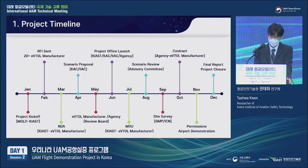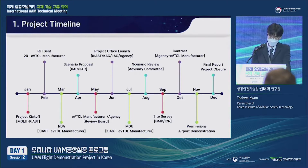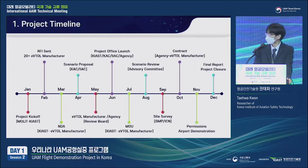Now I will briefly introduce the timeline for the flight demonstration project. This project was initiated in early January last year, led by MOLIT, in order to promote the introduction of UAM service and improve social acceptability. In February, a request for information was sent out to some 20 domestic and overseas eVTOL companies to secure the UAM aircraft needed for the program. Only a few companies showed a positive response, and an NDA was signed with a German eVTOL manufacturer for further communication in March.